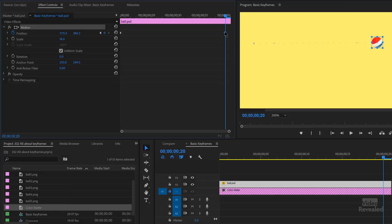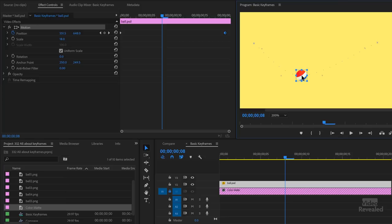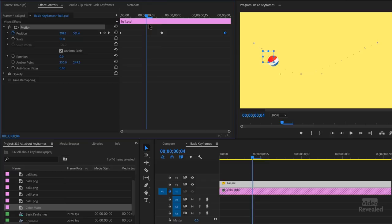I'm going to move my playhead in the middle of this and drag this down. And we've got three keyframes. So we've got an animation going from there, down to there, over to there.